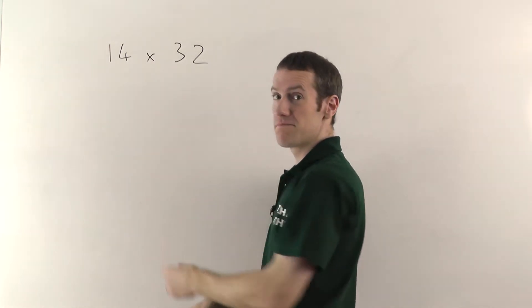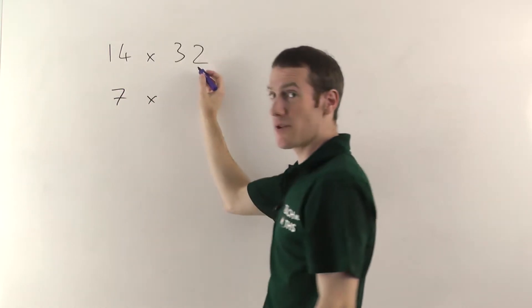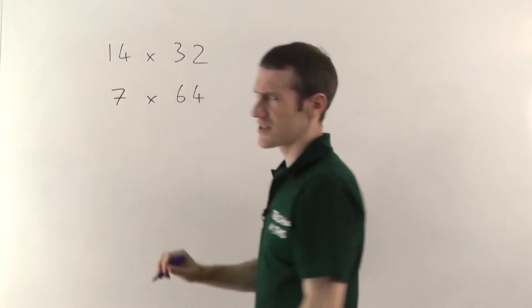So you halve 14, that gives you 7. And then you double 32, that gives you 64.